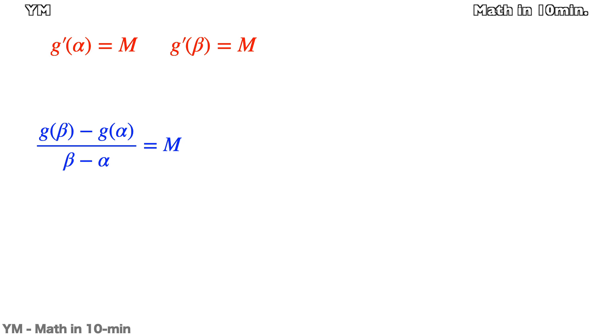Let's look at those three. The slopes of g(x) at x equals α and β are both M, and the average change of g(x) from (α, g(α)) to (β, g(β)) is M as well.